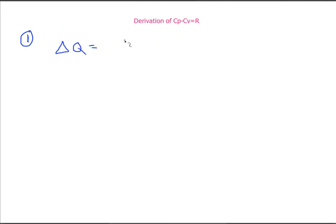Delta Q is equal to N Cp delta T. And then I'm going to advance this very quickly into college calculus and we're going to say dQ is equal to N Cp dT.